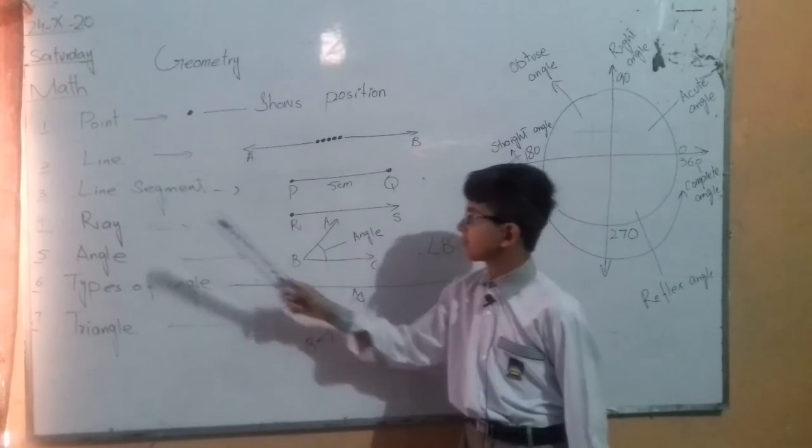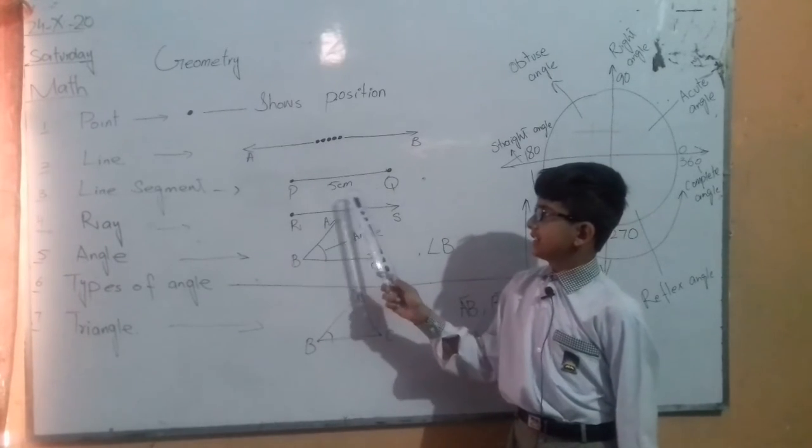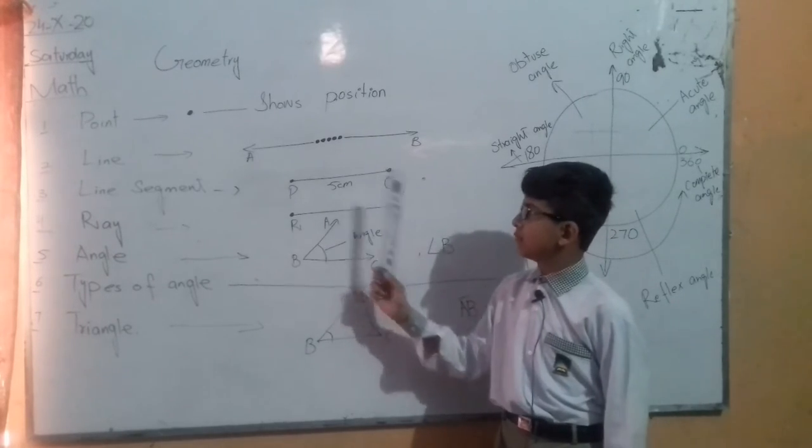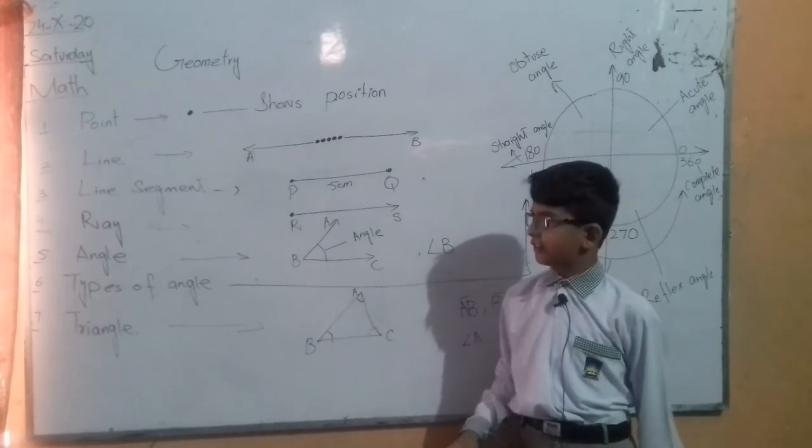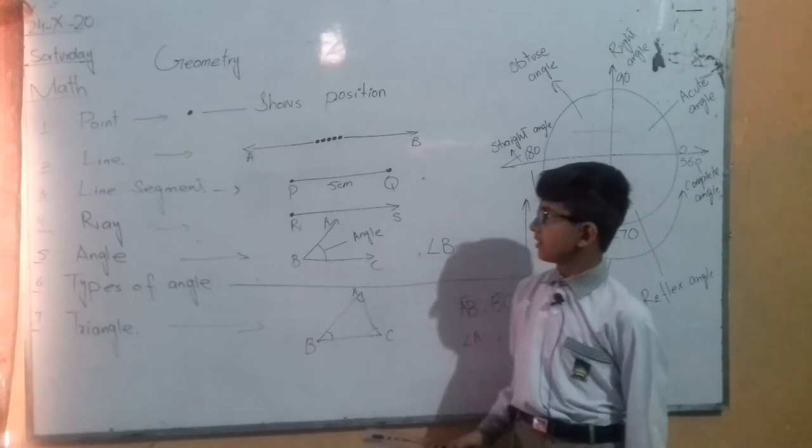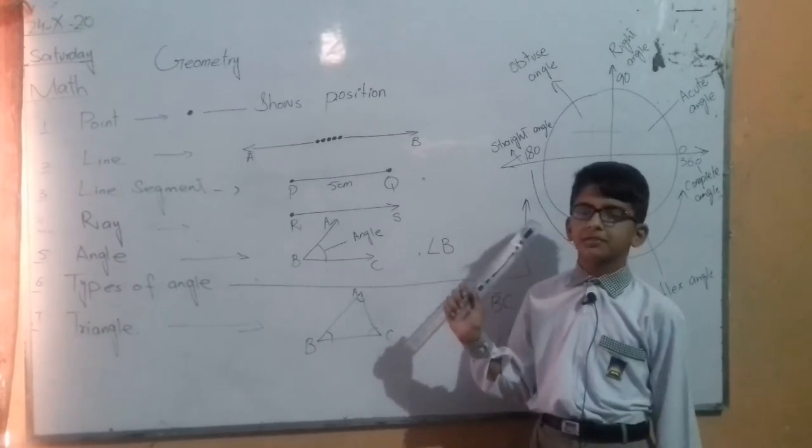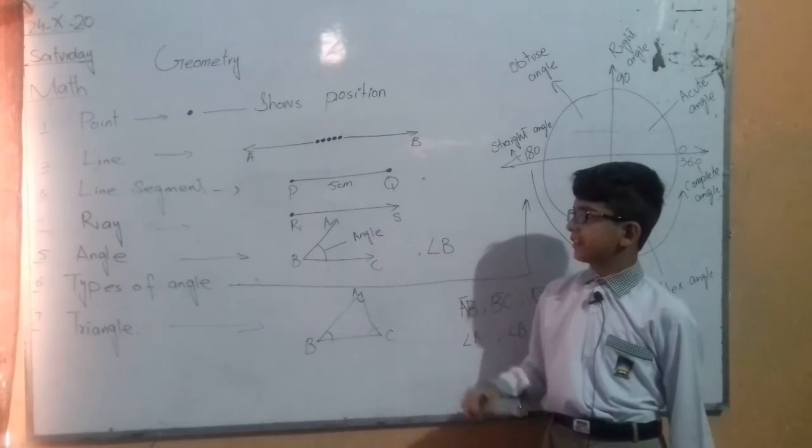Line segment. It is a part of line and it is bound at both ends. We can measure it. Ray. It starts from a fixed point and goes to infinity. We cannot measure it.